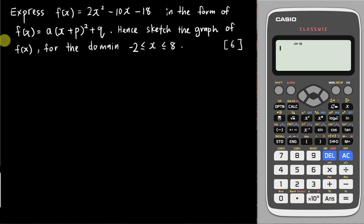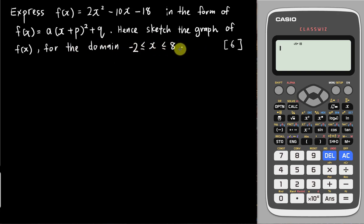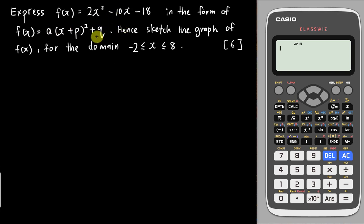When you see this equation, you should know this is related to completing the square, because this is a completed square form. The question also asks you to sketch the graph for f(x) at the domain between negative 2 to 8. So we need to do two things: first, completing the square, then sketch the graph.